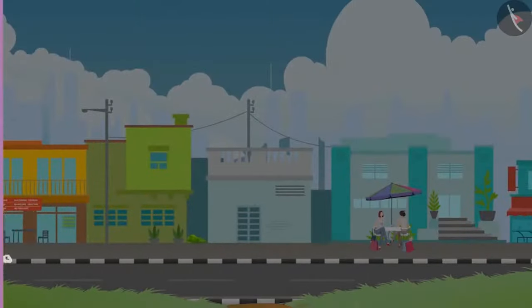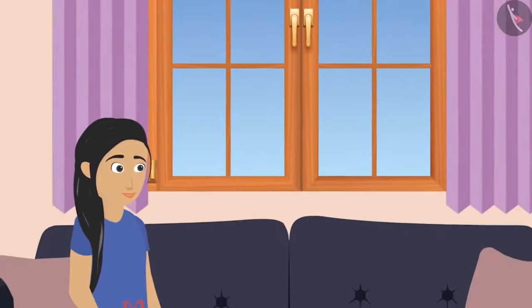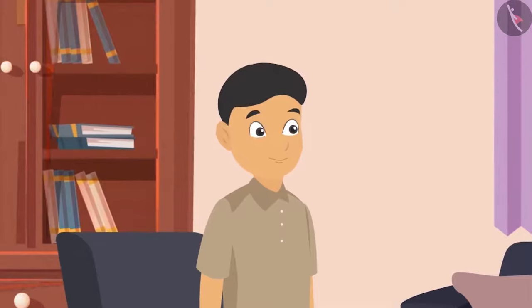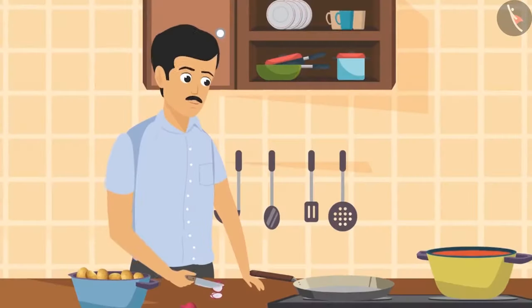It's the rainy season. Sunaina, her younger brother Sohan who is two years younger than her, and their father and mother are all at home. Dad is making his favorite potato onion pakoras.